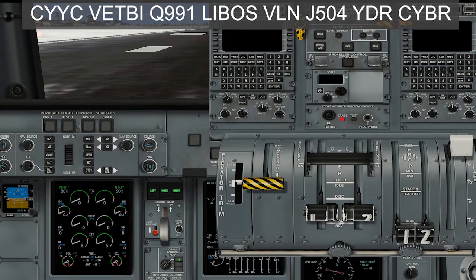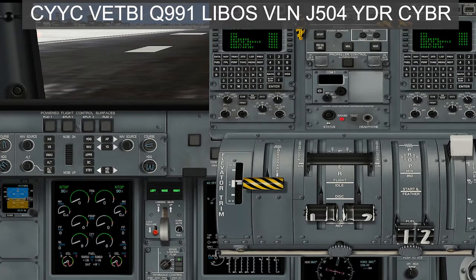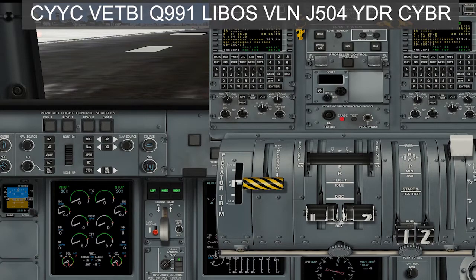We are going from Calgary to Brandon — so from Calgary, CYYC, to Brandon, which is CYBR. Our route on the flight plan is VETBI, Quebec 991. Quebec 991 is not a waypoint but an airway. So we're taking VETBI, airway Quebec 991, to LIBOS, direct to VLN, and then another airway, Juliet 504, to YDR. That is our route.